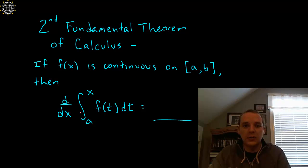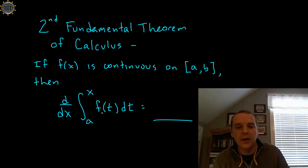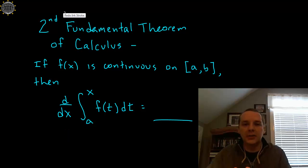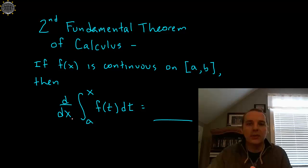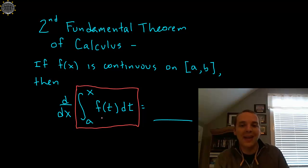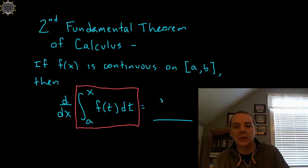What we're going to refer to as the second fundamental theorem of calculus says this: if you've got a function that's continuous on a closed interval, then if you take the derivative of the integral from a to x of f(t) dt, you get — well, instead of just giving it to you, let's think about this. What you should notice immediately is we have both a derivative and an integral going on, and integrals are basically the opposites of derivatives — you often even call them anti-derivatives. So what would you expect to get?